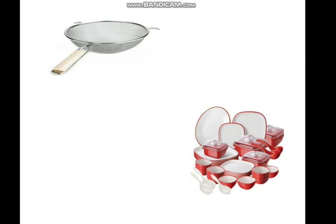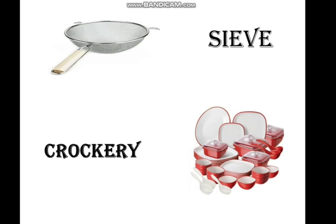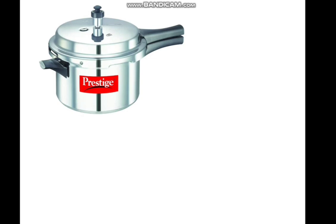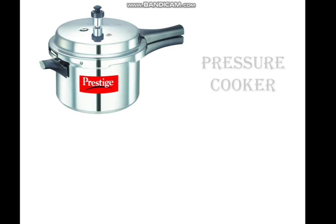Next, we use this to sieve flour or tea. In Hindi it is called chhani, and in English it is called a sieve — S-I-E-V-E. Now the next picture is of a crockery set. It has a bowl, plate, spoon, and so on. Now this is the picture of a pressure cooker.